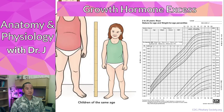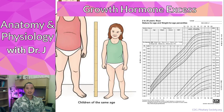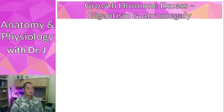What happens if you have too much growth hormone? Here we see a child who is way above her peers. With a deficiency they might prescribe recombinant growth hormone, but here we have growth hormone excess. There are two important terms to know: gigantism and acromegaly.